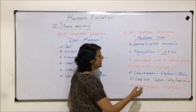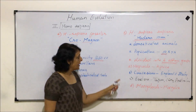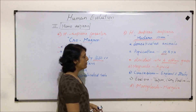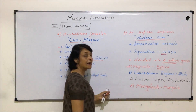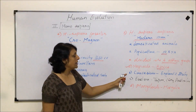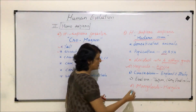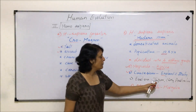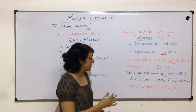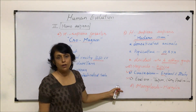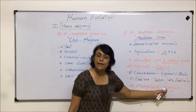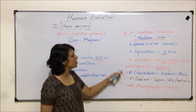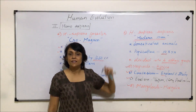Modern man — Homo sapiens sapiens — is divided into four ethnic groups based on region. Negroids are people living in the African region. Caucasians are people living in England or Italy. Eastern refers to people of Japan, China, Australia, and India. Mongoloids are people who live in Mongolia. These four ethnic groups are the further divisions of Homo sapiens sapiens.